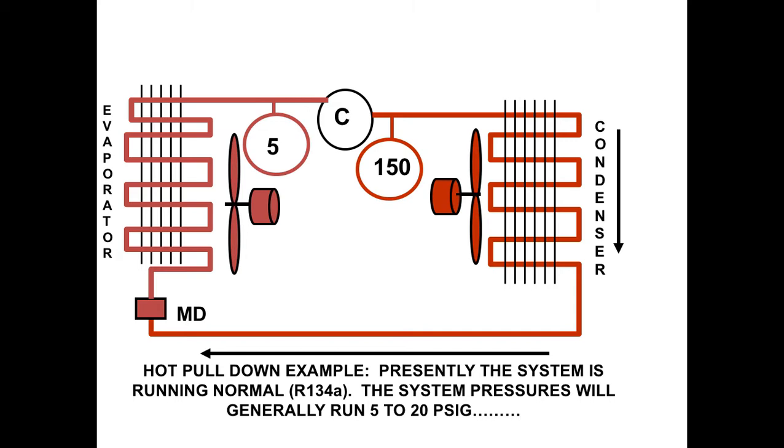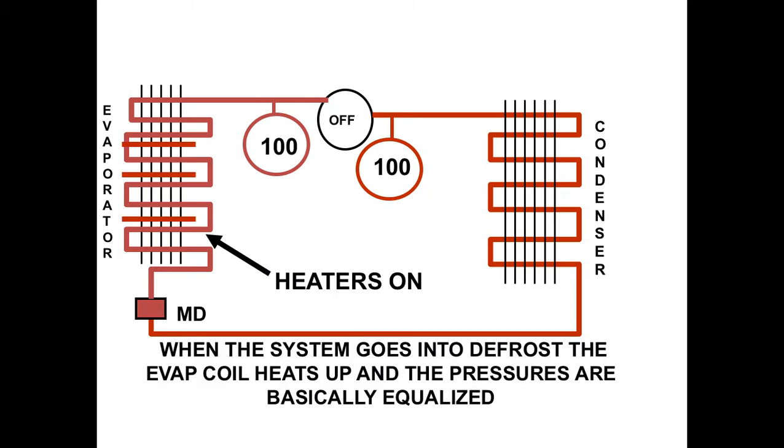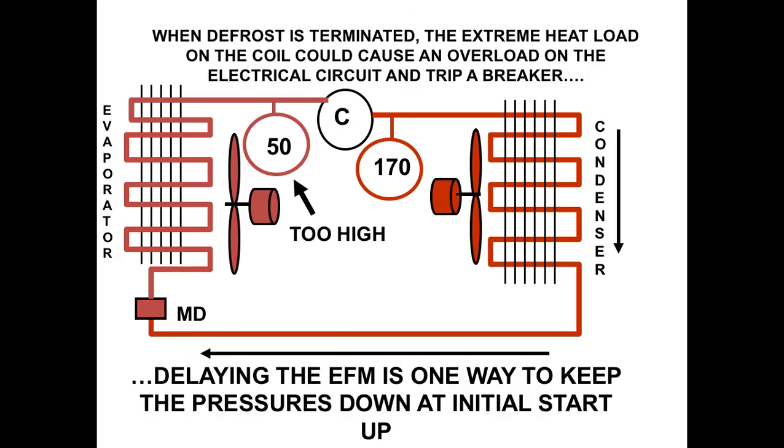This is an example of a hot pulldown. Presently, the system is running normally. The system pressures generally for 134A run between 5 and 20 PSI. So we go into defrost. We've shut the compressor off. The heaters are on. The compressor heats up. The pressures heat up as the coil heats up. The compressor's off. When the defrost is terminated, the extreme heat load on the coil could cause an overload on the electrical circuit and trip a breaker, delaying the EFM evaporator fan motor is one way to keep the pressures down at an initial startup. Allows that coil to cool down a lot faster to prevent the compressor from tripping on high amperage.